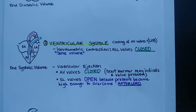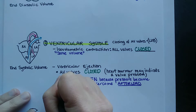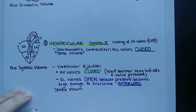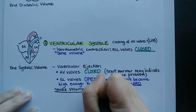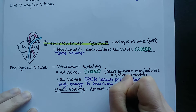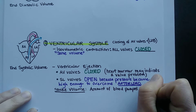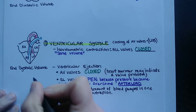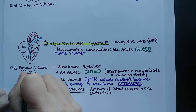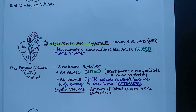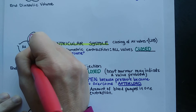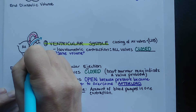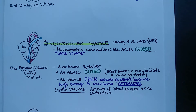Whatever blood was ejected during ventricular ejection is called stroke volume — the amount of blood pumped in one contraction. End systolic volume is typically about 50 milliliters of blood left in the heart; you don't pump all the blood out in one contraction. Both sides should pump out the same amount, so about 50 milliliters remain in each ventricle.